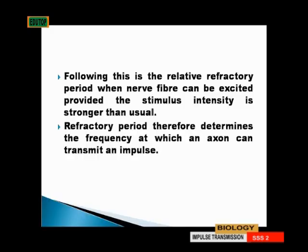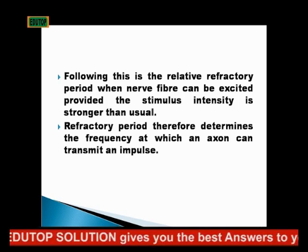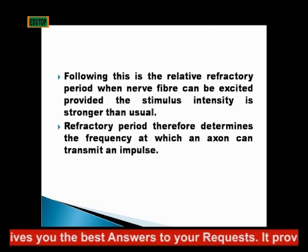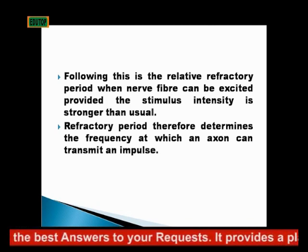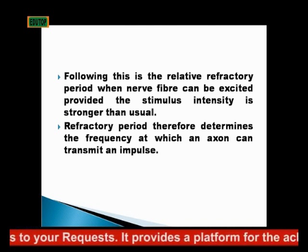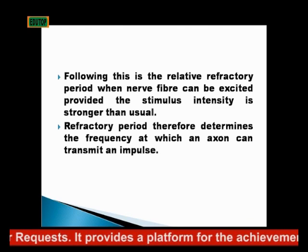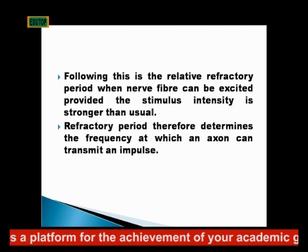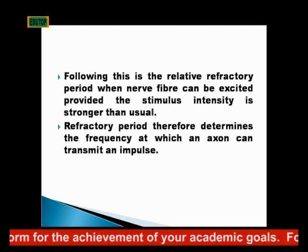Following this refractory period — called refractory because we have resting potential and action potential — there is the relative period when the nerve fiber can be excited again, providing the stimulus intensity is stronger than usual. The refractory period therefore determines the frequency at which an axon can transmit an impulse.